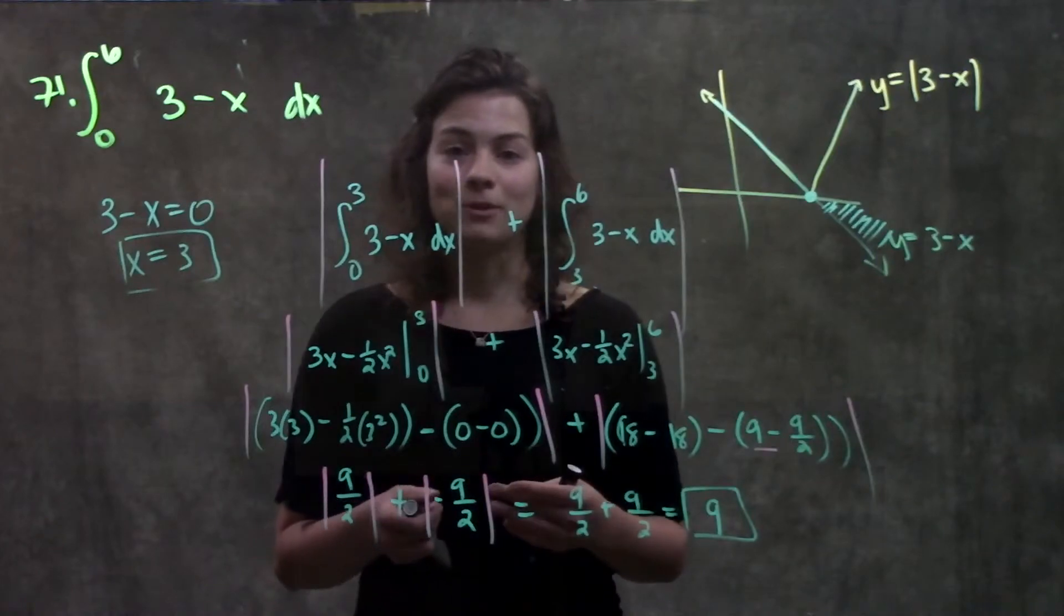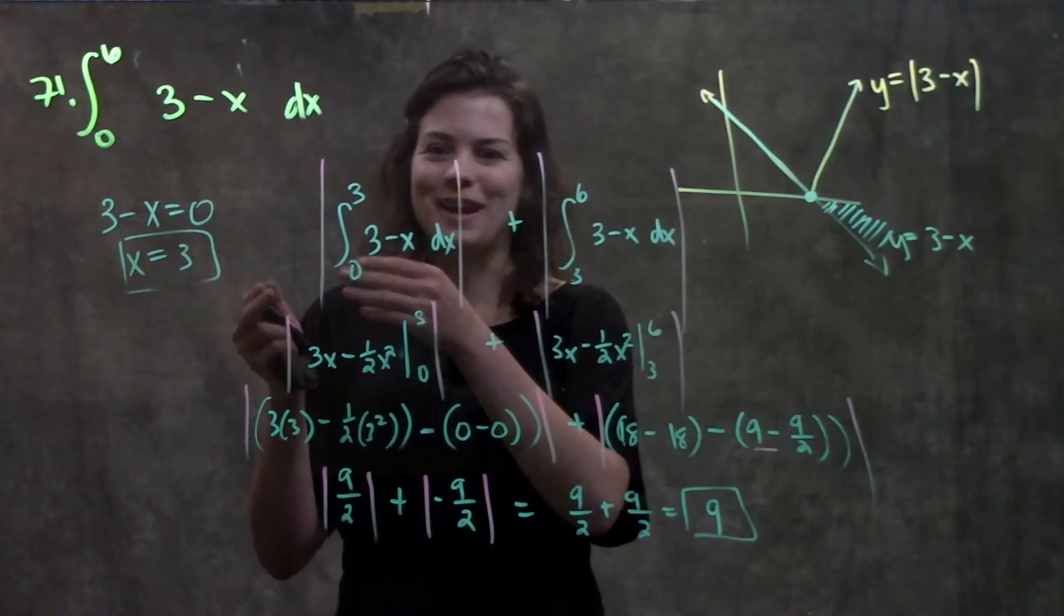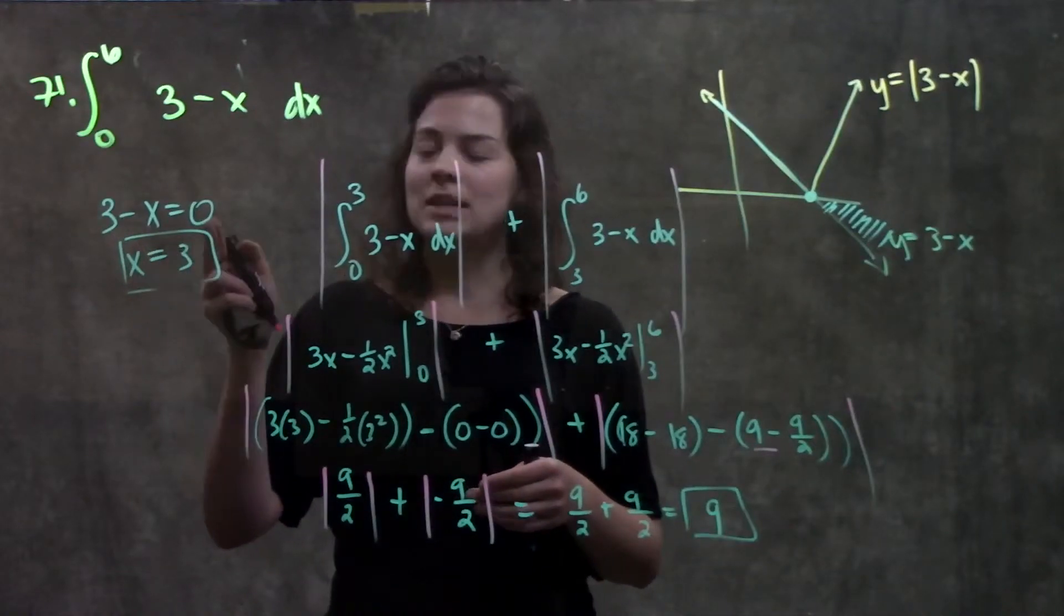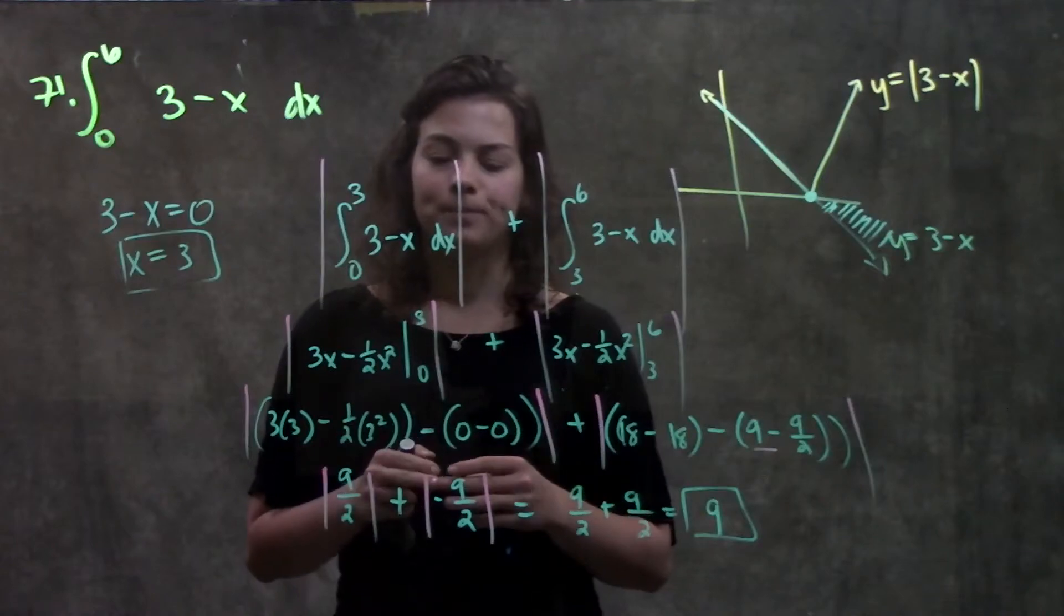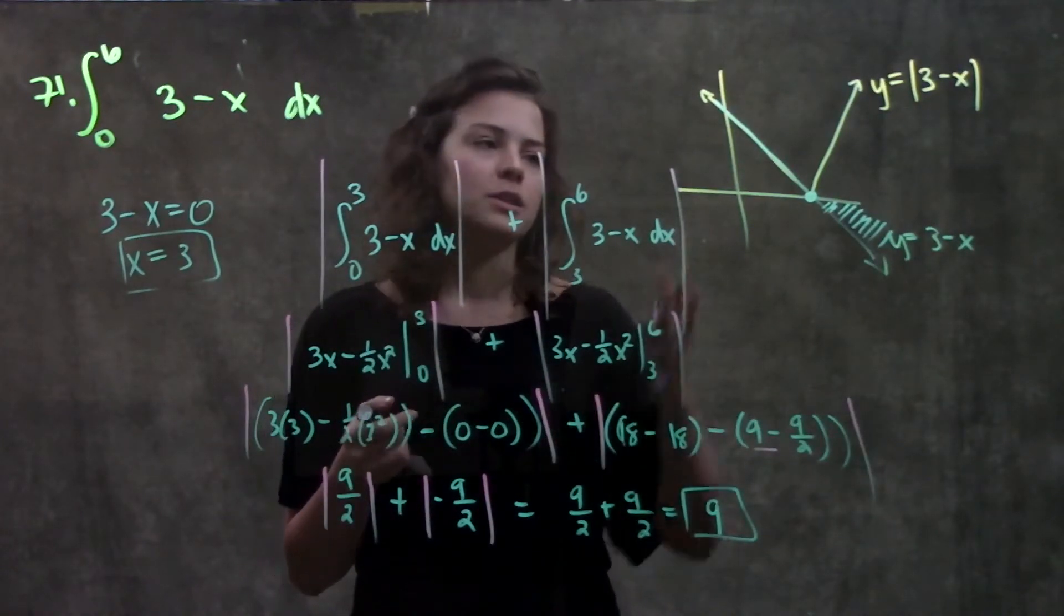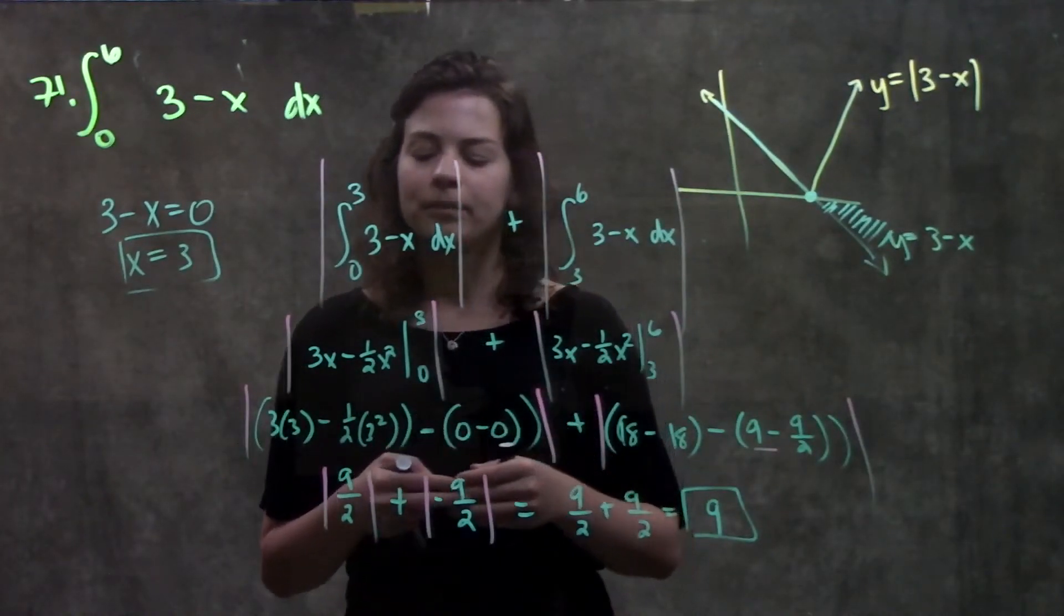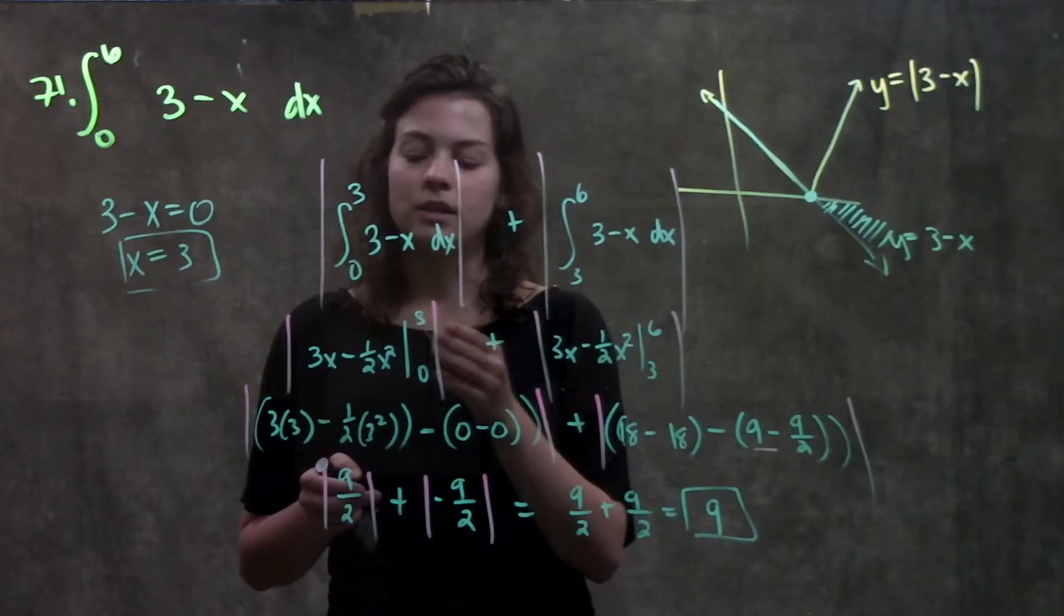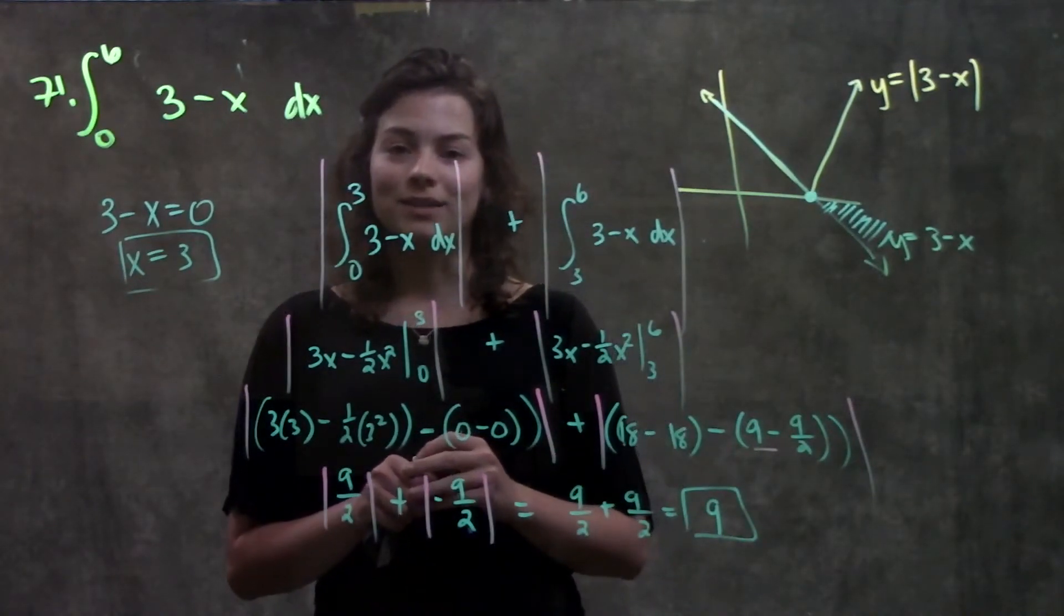So a brief recap of how to do absolute value integrals. You can just ignore the absolute value for now. See where the function equals zero, and then split up your integral at that point. And remember, take the absolute value of both of these sections, because you won't always have a graph there, so you won't know which part is going to give you the negative area. So just make sure that when you're solving out your integral, you have two positive areas being added together, and that will give you your answer.